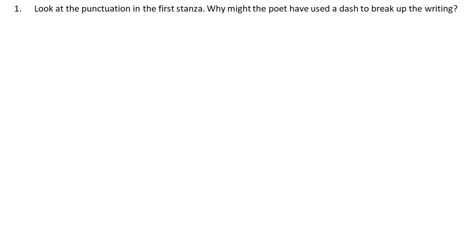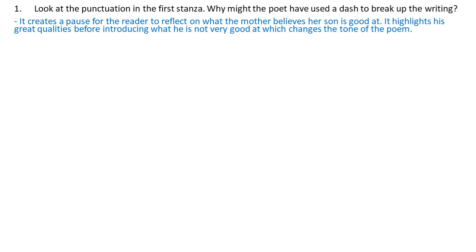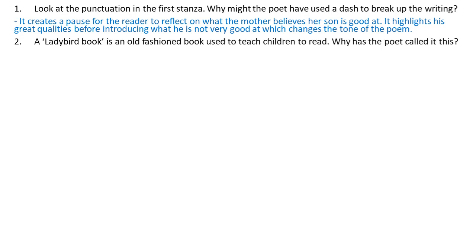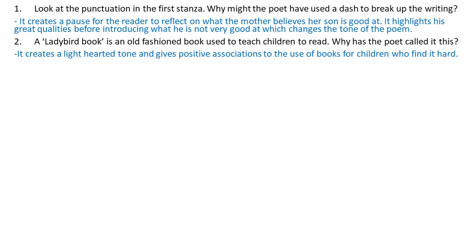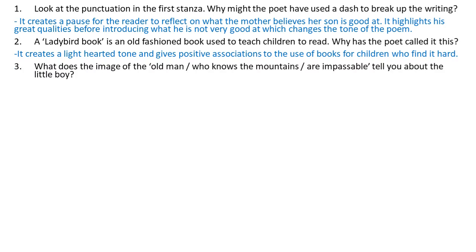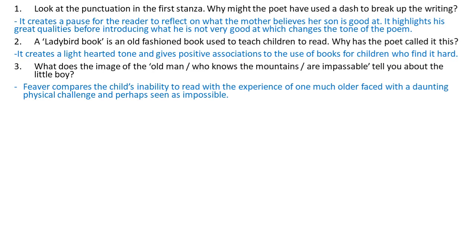First, we're going to look at the punctuation in the first stanza. Why do you think the poet used a dash to break up the writing? It creates a pause for the reader to reflect on what the mother believes her son is good at. It highlights his great qualities before introducing what he is not very good at, which changes the tone of the poem. A Ladybird book is an old-fashioned book used to teach children to read. Why has the poet called it this? It creates a light-hearted tone and gives positive associations to the use of books for children who find it hard. What does the image of the old man who knows the mountains are impassable tell you about the little boy? The poet compares the child's inability to read with the experience of one much older, faced with a daunting physical challenge, and perhaps seen as impossible.